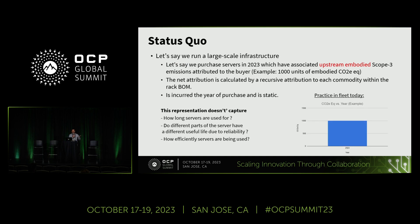Let's evaluate what the status quo is. Let's say we run a large-scale infrastructure — we purchase servers in 2023 and they have associated upstream embodied scope 3 of 1,000 units. The net attribution is calculated by using a recursive attribution to each commodity within the rack. In the current model, it is only incurred in 2023 and the rest of the years we don't even know what's going to happen with that resource. Hypothetically, one could game this metric by saying, okay, I'm going to incur all my resource costs in 2023.